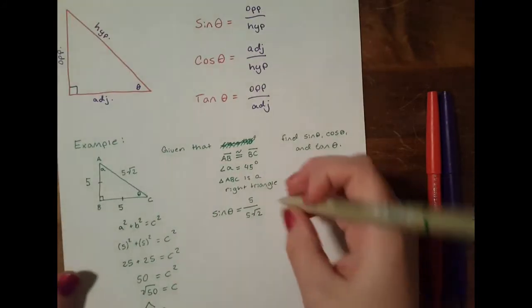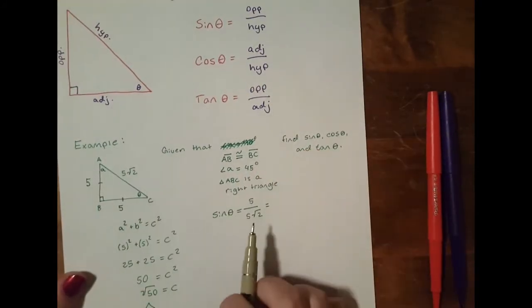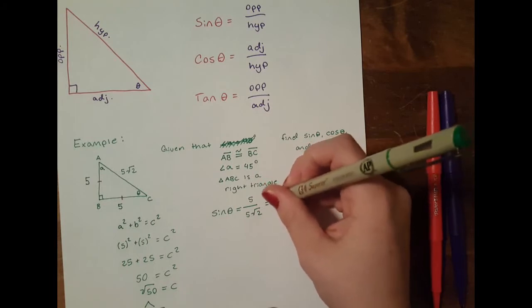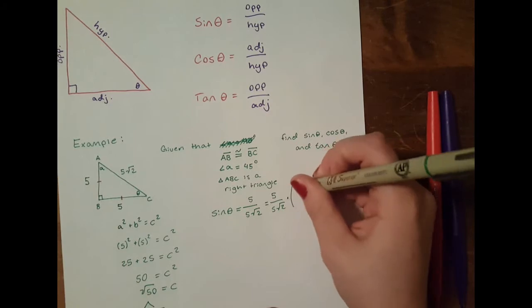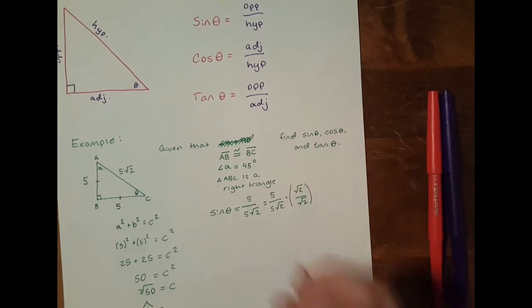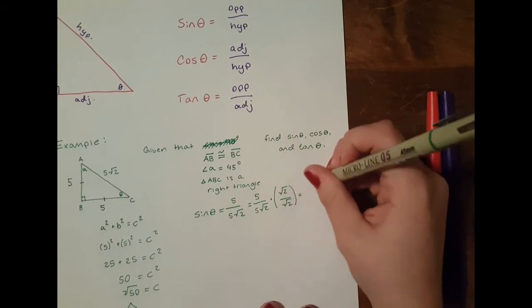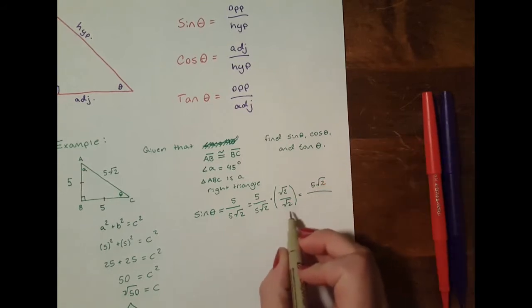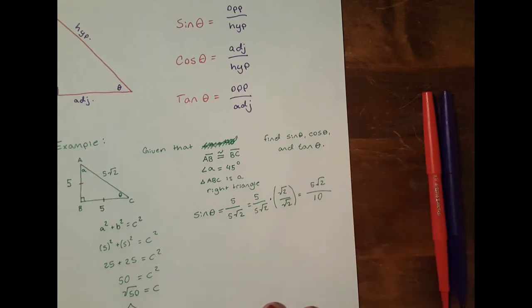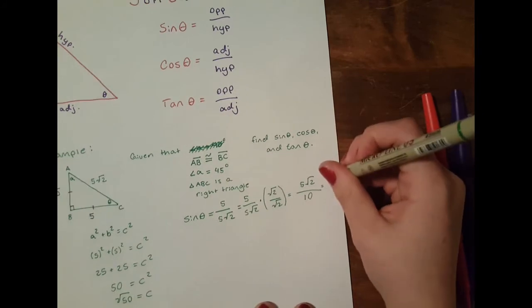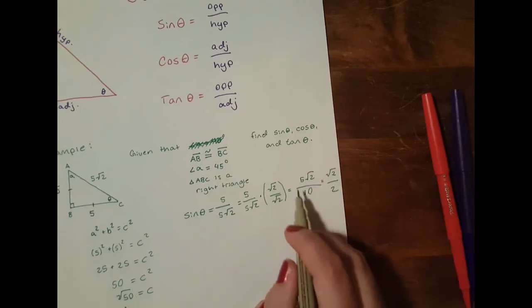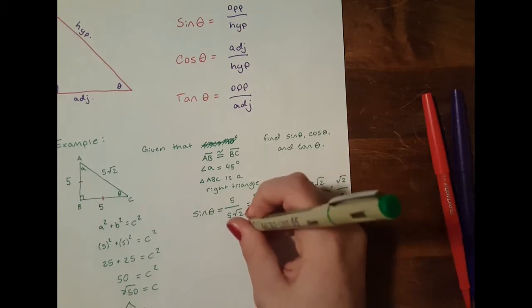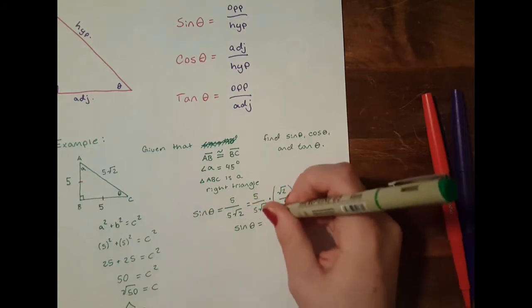And we can simplify this. As a general rule, you really don't want to have a root in your denominator. So to do that, we can multiply by root 2 over root 2, which will give us 5 root 2 over 5 root 2 times root 2, which equals 2. So 5 times 2 is 10. And that just equals root 2 over 2, because the 5 and the 10 cancel out. So we know that the sine of theta equals root 2 over 2.